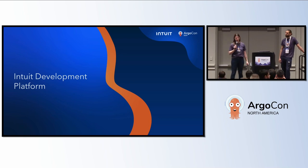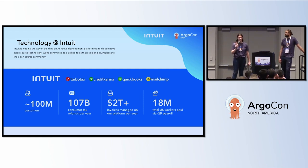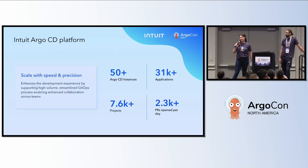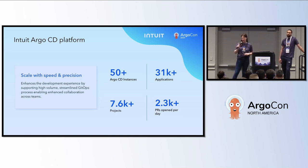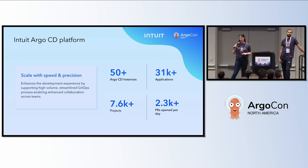So, our Intuit development platform. Intuit is a global financial company that builds an AI platform to power our 100 million customers. We are super excited to be here at KubeCon and ArgoCon because we're also really big in the open source community. Looking at our Argo CD platform internally: we have 50-plus instances, over 31,000 applications, and over the last four years we have 8x'd our developer productivity.